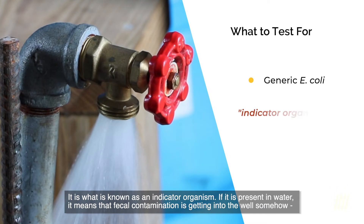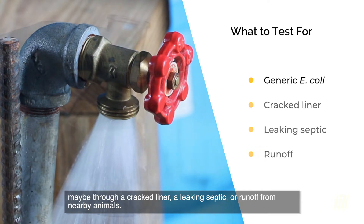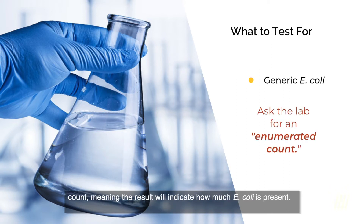Generic E. coli is what is known as an indicator organism. If it is present in water, it means that fecal contamination is getting into the well somehow, maybe through a cracked liner, a leaking septic, or runoff from nearby animals. Tell the lab that you are interested in testing your agricultural water for generic E. coli. It is recommended that you get an enumerated count, meaning the results will indicate how much E. coli is present.